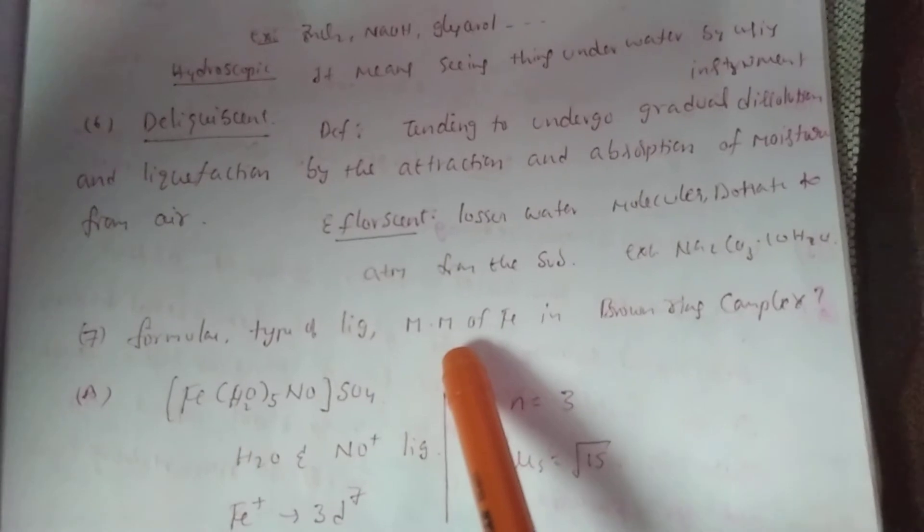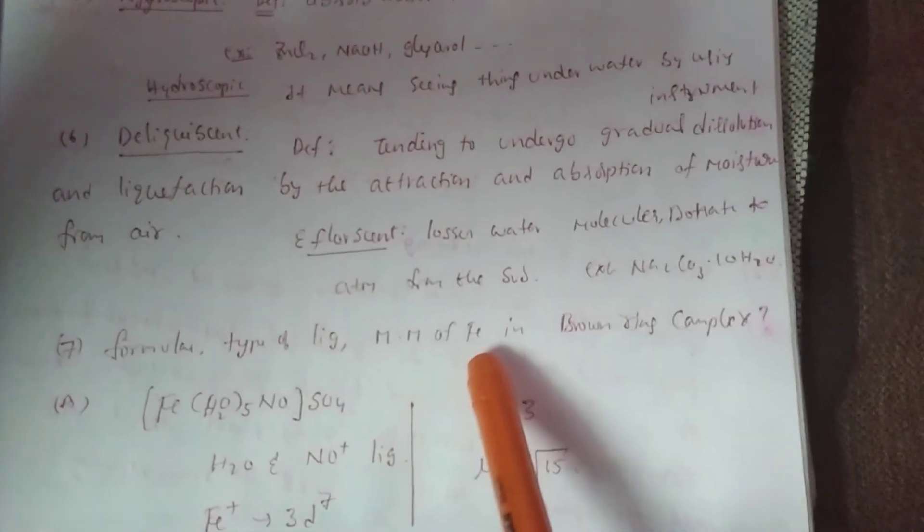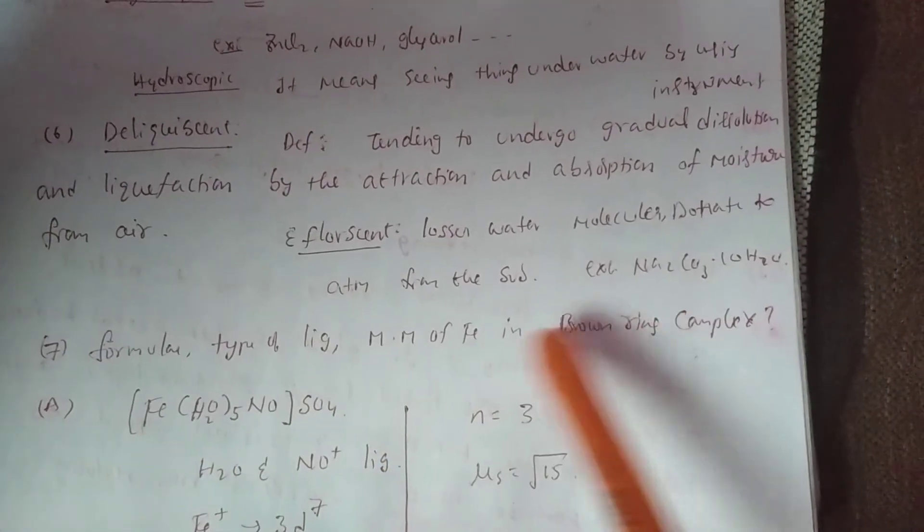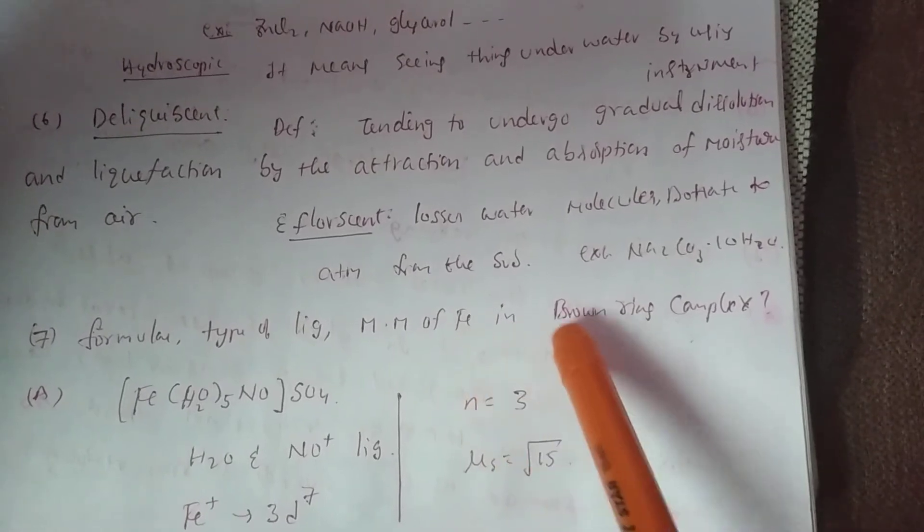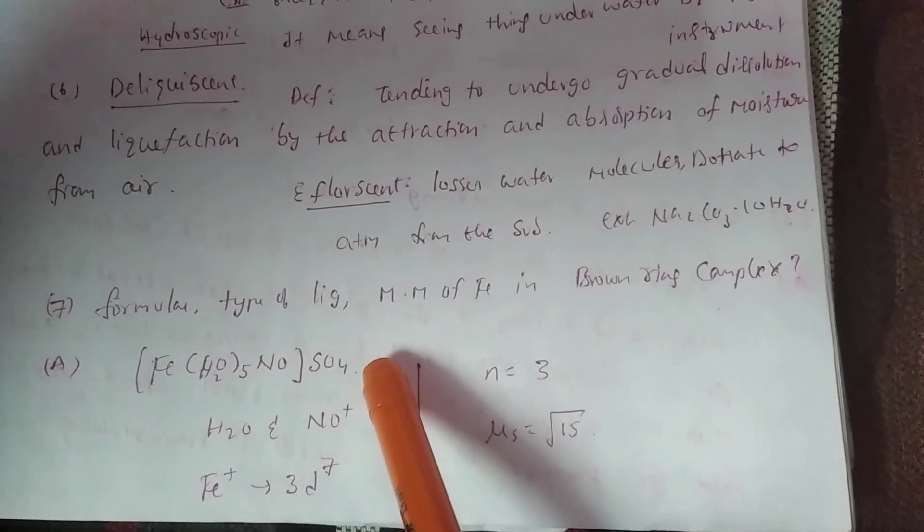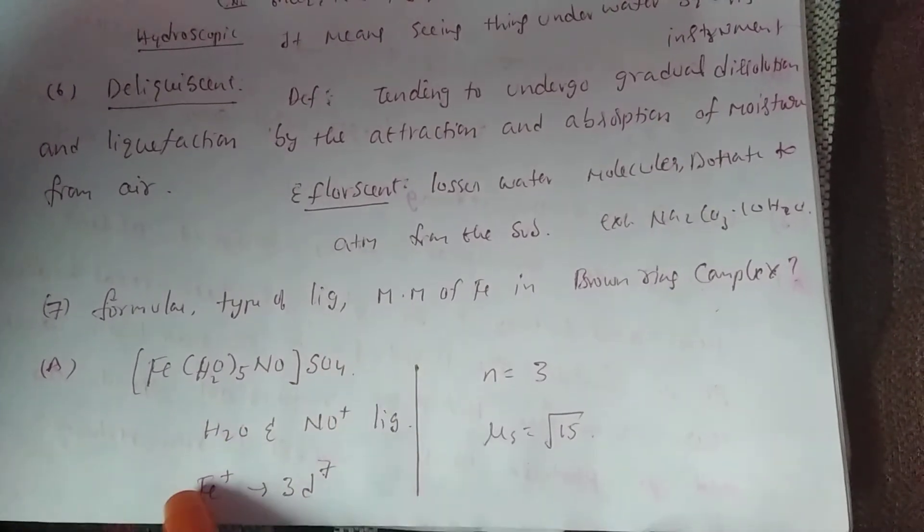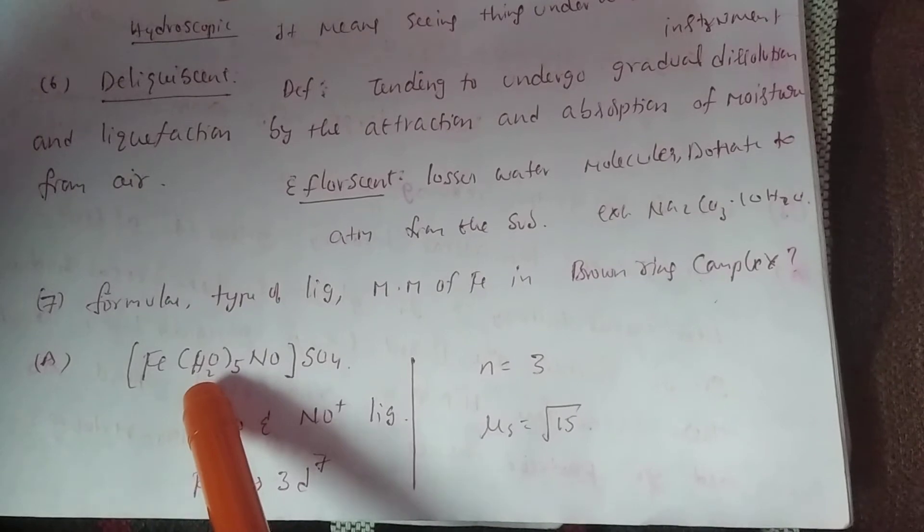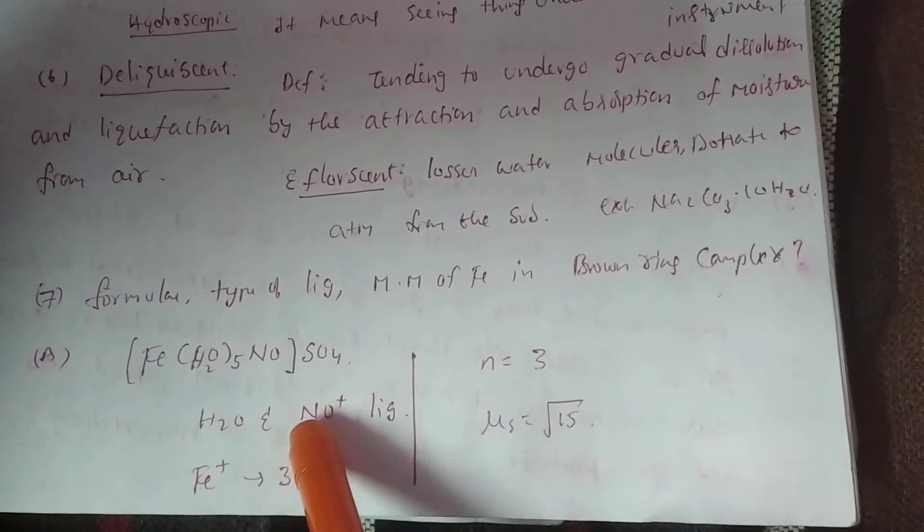Question: type of ligands and magnetic moment of iron in brown ring complex. Brown ring complex formula: Fe(H2O)5(NO)SO4. Here type of ligands H2O and NO plus are present.